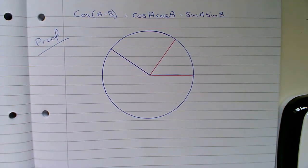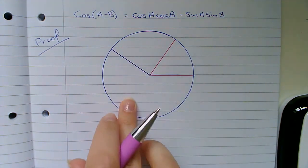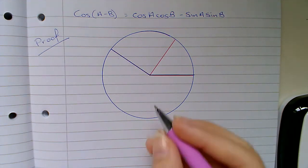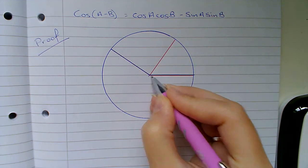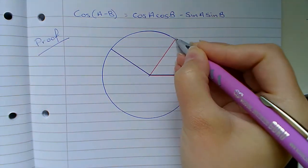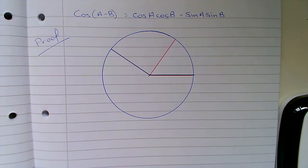Before we get into it, I just want us to think back to our unit circle. A unit circle is called a unit circle because it has a radius length of one unit. So if we imagine that this is the origin, then from here to here is a radius length of one, from here to here is one, from here to here is one, and so on.